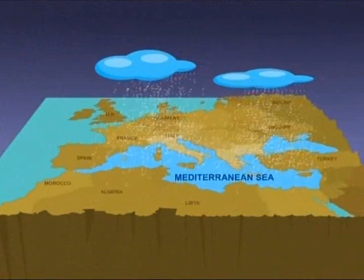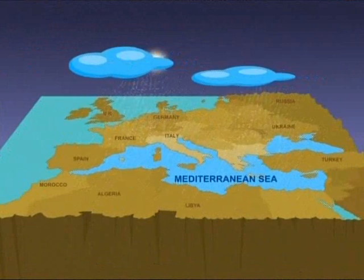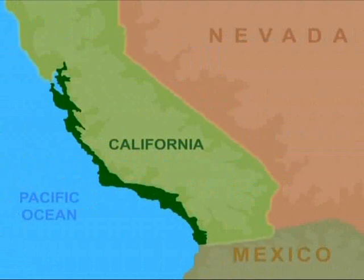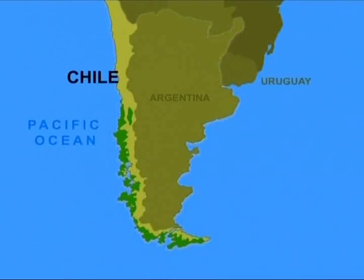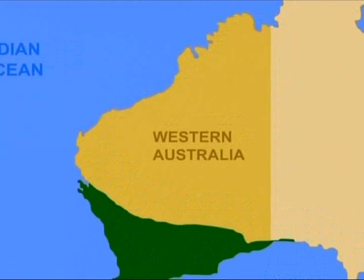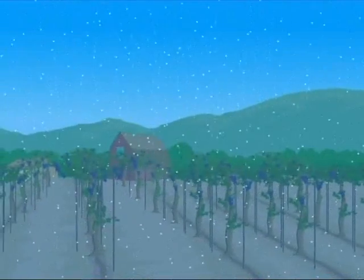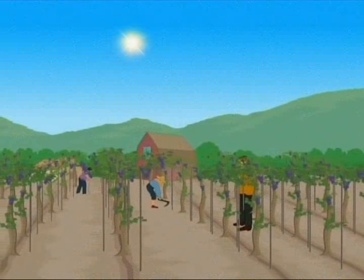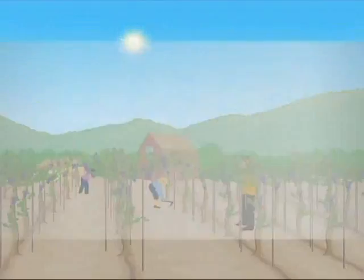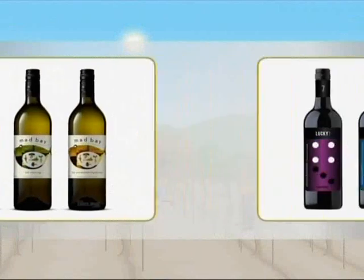But it is not only the Mediterranean region that experiences this kind of climate. All over the globe, ranging from California and Chile to South Africa and Western Australia, there is a similarity in conditions, giving rise to similar shrubland plants. This type of climate is ideal for grape vines, which is why so many of the world's vines come from these parts of the world.